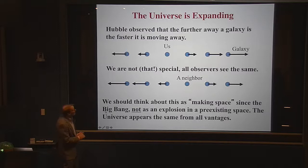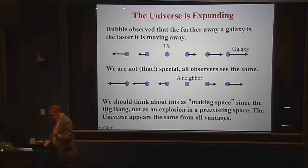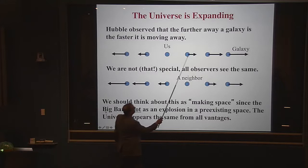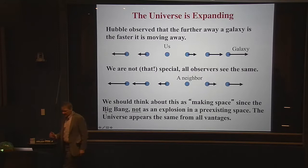What Hubble observed was — taking a combination of other people's observations — that the further a galaxy is from us, the faster it's moving. If it is twice as far away, it's moving twice as fast. Three times further away, it's moving three times as fast. You might think that makes us special, but we're not. In this picture, any observer in the universe sees the same thing.